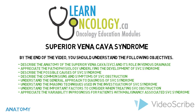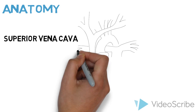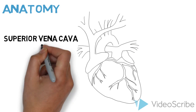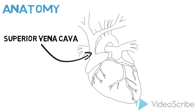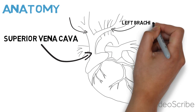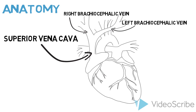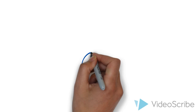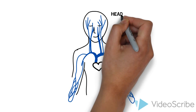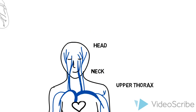The superior vena cava, or SVC, is a vein located in the superior mediastinum that extends from the left and right brachiocephalic veins to the right atrium of the heart. The SVC drains blood from the head, neck, upper extremities, and upper thorax.